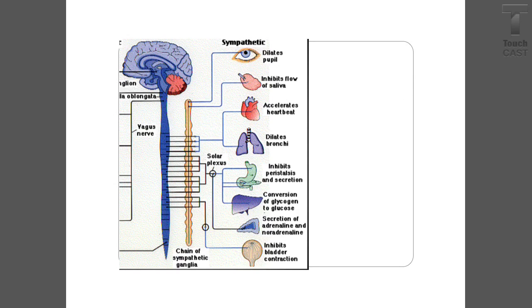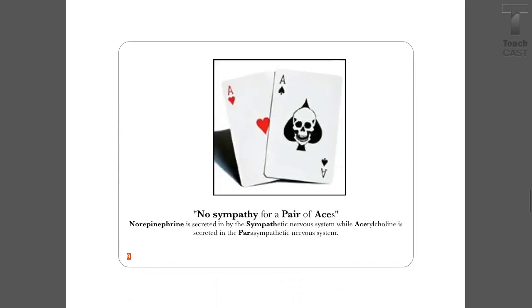The sympathetic system dilates your pupils, inhibits flow of saliva, pumps up your heart rate, dilates your bronchioles, and decreases your GI motility while sending blood to your skeletal tissues so you can run. It works on the neurotransmitters norepinephrine, epinephrine, and dopamine. Remember: there's no sympathy for a pair of ACEs — norepinephrine is secreted by the sympathetic nervous system while acetylcholine is secreted by the parasympathetic nervous system.